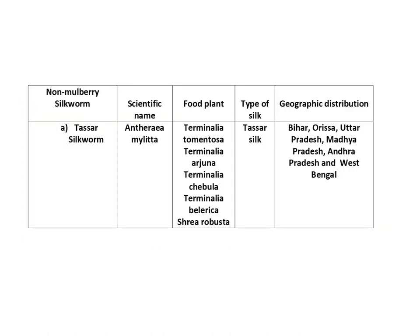Non-mulberry silkworms are those which feed on non-mulberry food plants such as Terminalia species, Ricinus communis, Machilus bombicina, etc. Non-mulberry silkworms are wild varieties and there are more than 500 species. For convenience, they are classified into Tasar silkworm, Eri silkworm, Muga silkworm, Oak silkworm, and Aina silkworm.